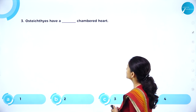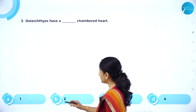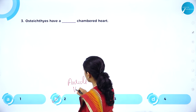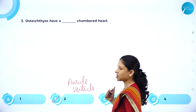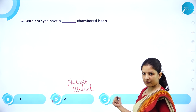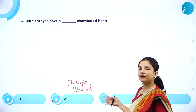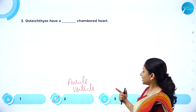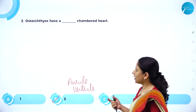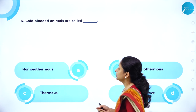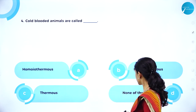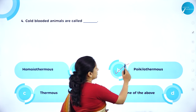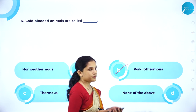MCQ 3: Osteichthyes have a how many chambered heart — one, two, three, or four? They have one auricle and one ventricle, so the answer is a two-chambered heart, option B. Three-chambered hearts are found in reptiles and amphibians; four-chambered hearts are found in birds and mammals. MCQ 4: Cold-blooded animals are called — homeothermous, poikilothermous, or thermos? Homeothermous refers to warm-blooded animals. The correct term for cold-blooded is poikilothermous — option B.